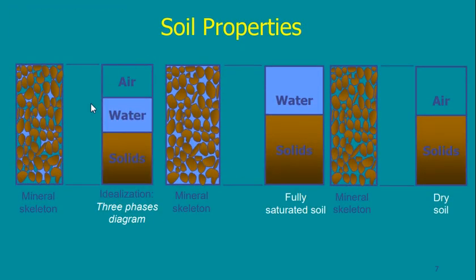Starting with the three-phase diagram consisting of air, water, and solid, I have to study the possibilities. Can it be a two-phase diagram? Yes. It should always include the solid, because if there is no solid, then it's not soil. But in some cases, all the voids may be full of water — which is the case of fully saturated soil.